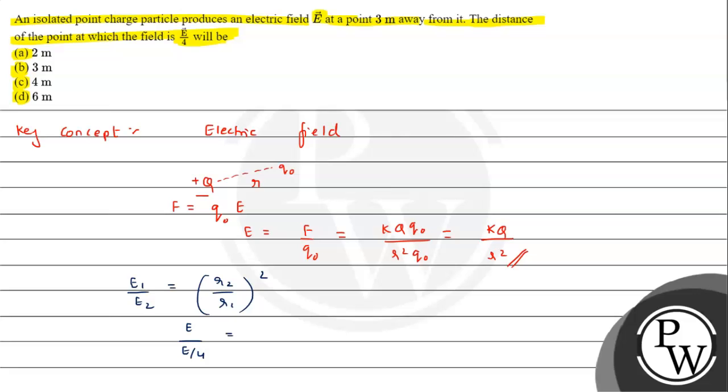Now E1 is given as E and E2 is given as E by 4, right? Just in terms of magnitude we are writing. r2 we have to know, r1 is given as 3 meter. So here we can see E, E cancels.